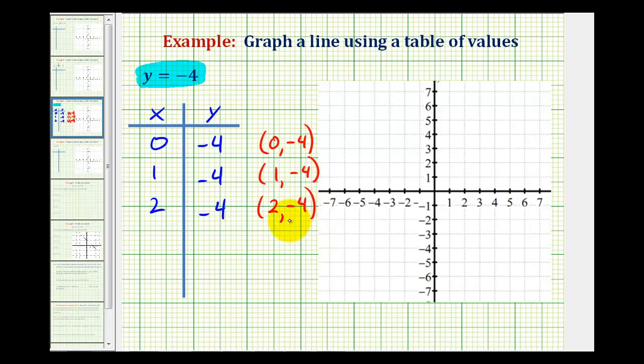If we plot these three points, we can sketch the line y equals negative 4. The point (0, -4) is on the y-axis, our y-intercept. For the point (1, -4), we move 1 unit to the right of the origin and then down 4 units. For the point (2, -4), we move right 2 units and down 4 units.